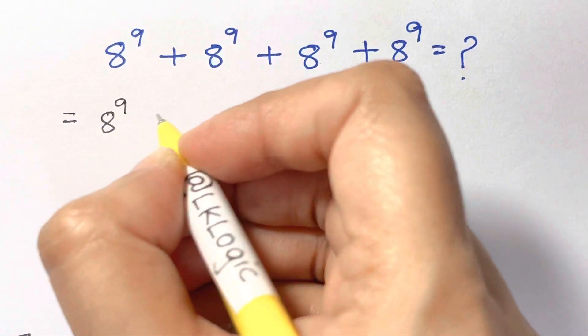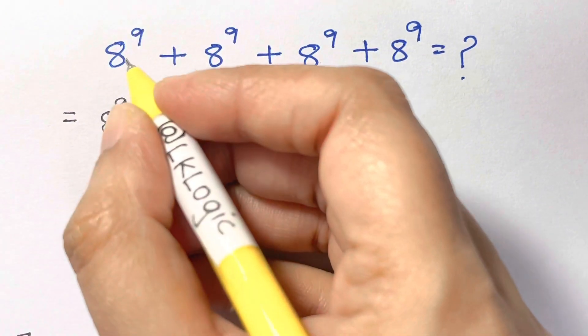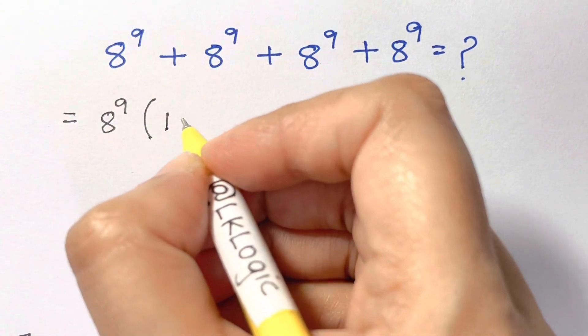So here we are going to take 8 to the power of 9 common and we are left with 8 to the power of 9 divided by 8 to the power of 9 is 1.